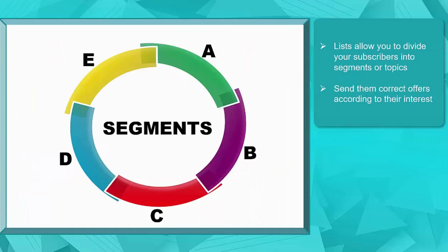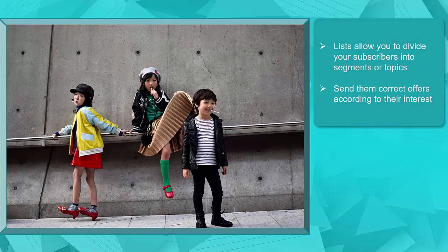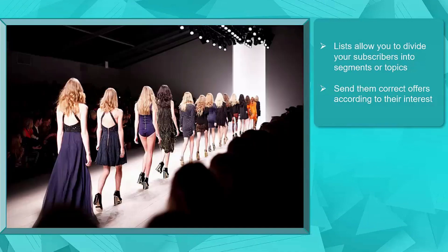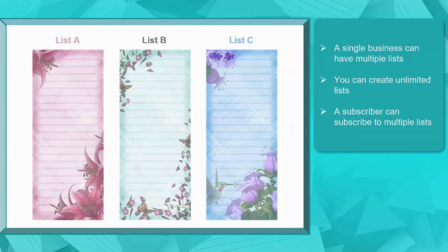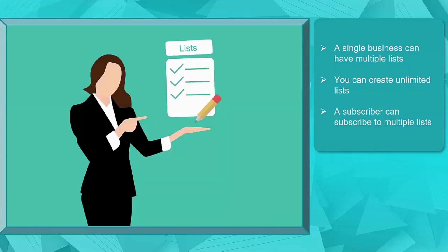Lists give you an opportunity to divide your subscribers into segments or topics. For example, if you're a clothes store, you can make a list of people interested in kids fashion and another list of people interested in women's fashion, and you can send them correct offers according to their interest. A single business can have multiple lists, and you can create any number of lists you want. A subscriber can even subscribe to multiple lists.